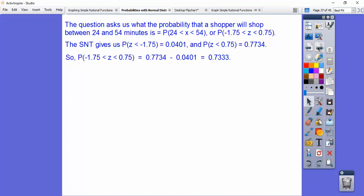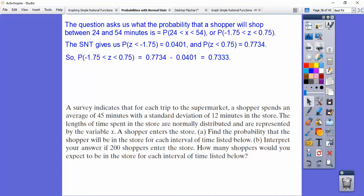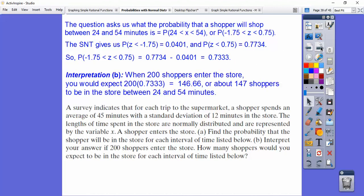All right, now the second part says, now use that. And if we have 200 shoppers, so right here, interpret your answer. If 200 shoppers entered the store. Well, this percentage of the 200 shoppers will be in that time zone of 24 minutes to 54 minutes. So we just multiply 200 times that probability. And we get about 147 shoppers to be in the store between 24 minutes and 54 minutes.